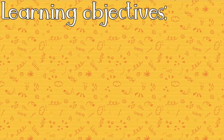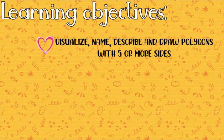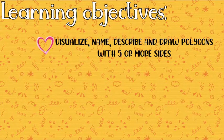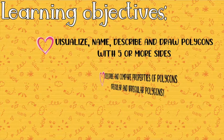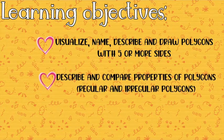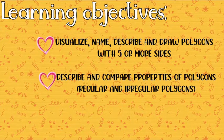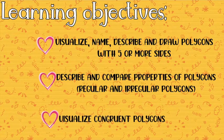For our learning objectives, we have: visualize, name, describe, and draw polygons with five or more sides; describe and compare properties of polygons, regular and irregular polygons; and lastly, visualize congruent polygons.